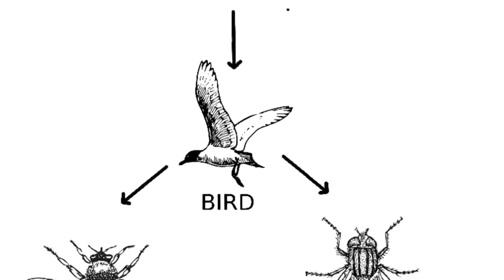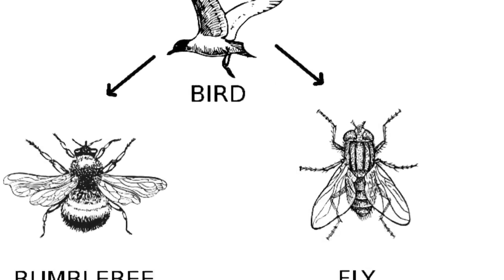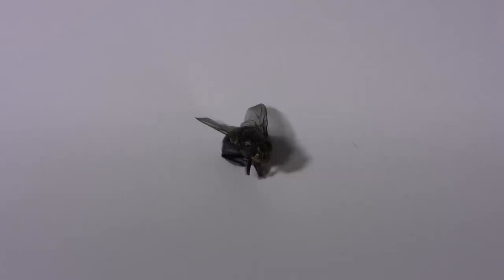Instead of the bee, we turn to the close relative of the bee, the fly. Flies may be weaker than bees, but they are plentiful and can be reared all year round at a low cost.